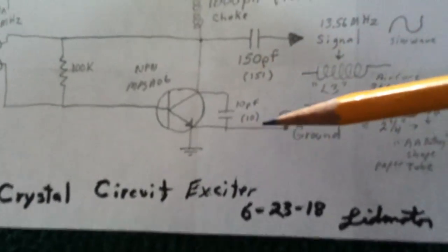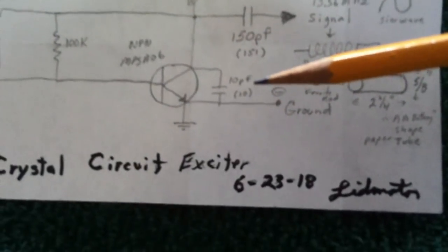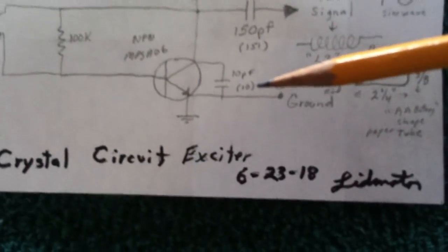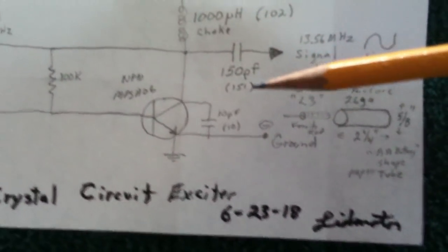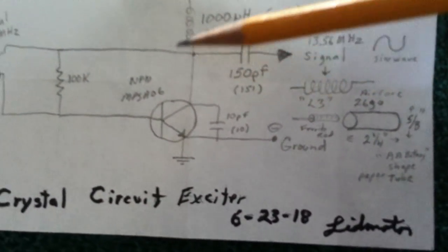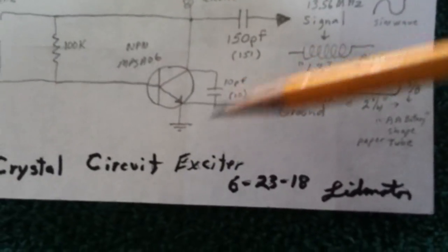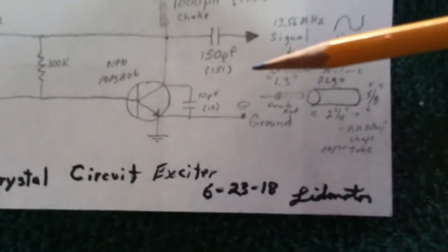I ended up just using the same thing as this, which is this 10 picofarad, which is a 10 on the little tiny thing on the second build. But you can use a number of things here. As long as you're down in the picofarads, you can usually get it to run.